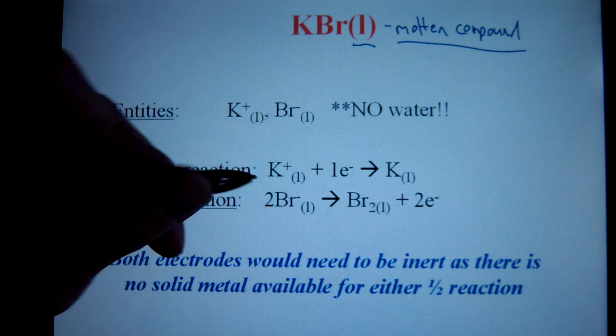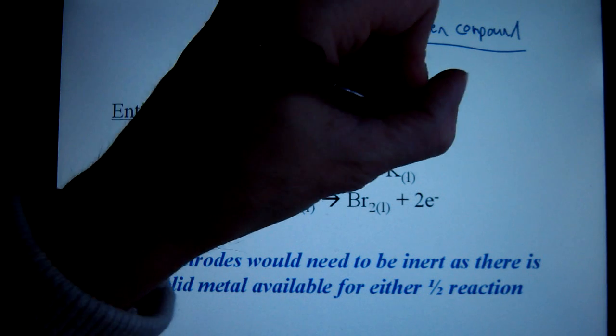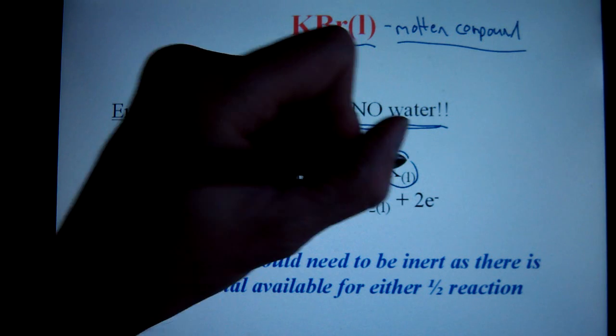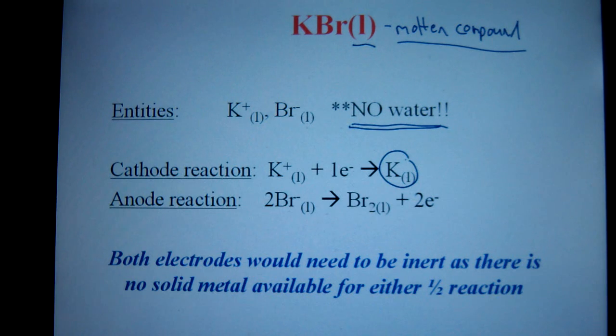Secondly, and more importantly, the reason this is done is you want to keep water out of the loop. If we want to produce pure potassium, pure potassium metal, we can't do it if water is around, because water is a stronger oxidizing agent than potassium ion, and on anything else in Group 1 for that matter.